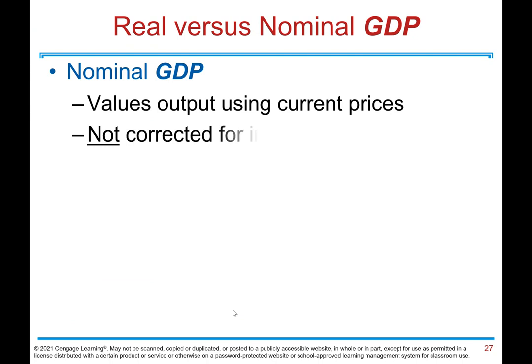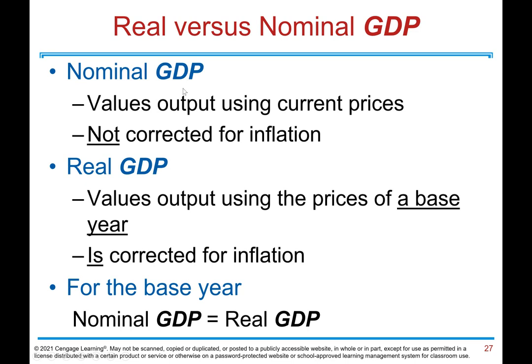Real versus nominal GDP. Nominal GDP values output using current prices and is not corrected for inflation. Real GDP values output using the prices of the base year and is corrected for inflation. For the base year, nominal GDP is always equal to real GDP.